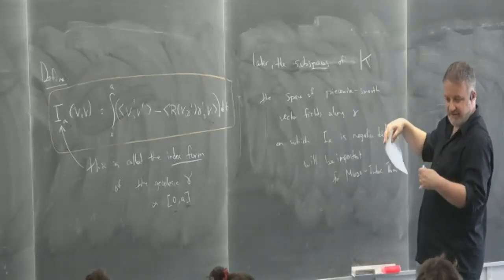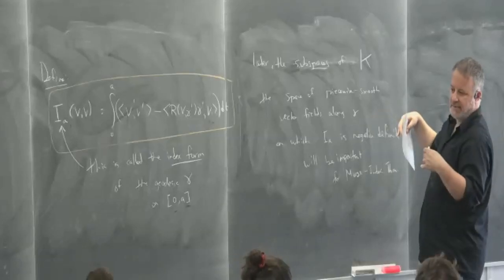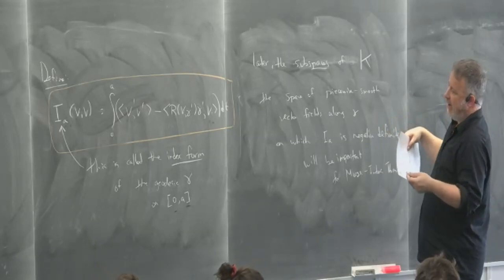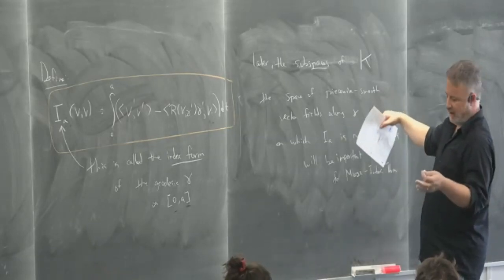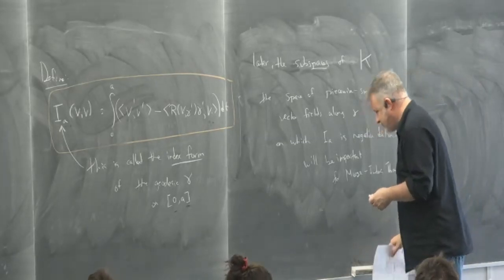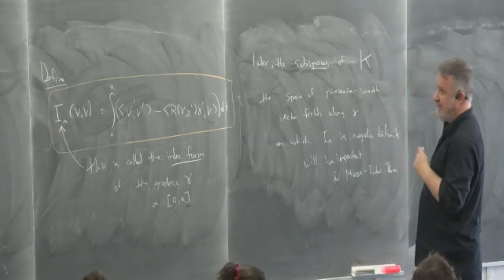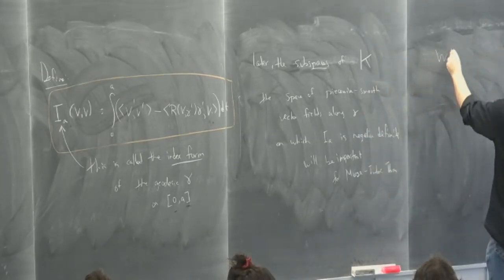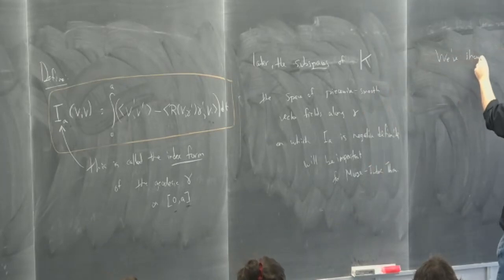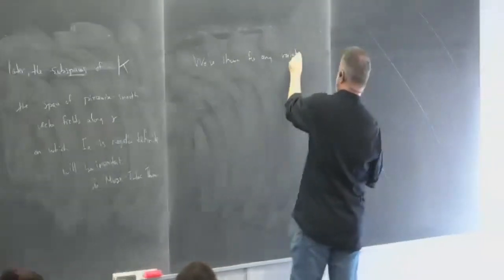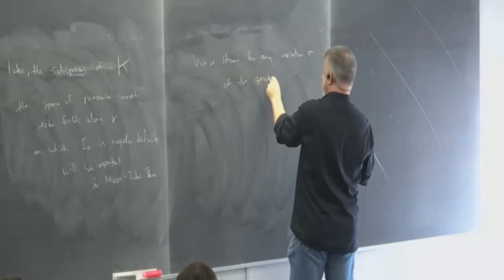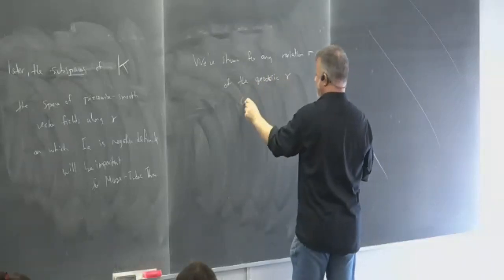The index form is a quadratic form on the space of piecewise smooth vector fields along gamma — an infinite-dimensional vector space. Polarizing it gives a symmetric bilinear form. There's no spectral theorem since it's infinite-dimensional, but we can still look for eigenvalues. The subspaces of piecewise smooth vector fields along gamma on which I_A is negative definite will be important for the Morse index theorem. What we'll prove is that there is a finite-dimensional maximal subspace on which the index form is negative definite, and on the rest of the space it's positive semi-definite.